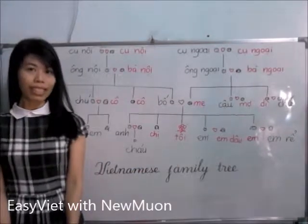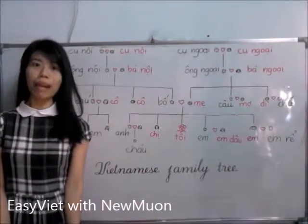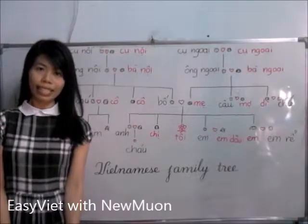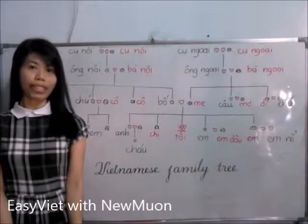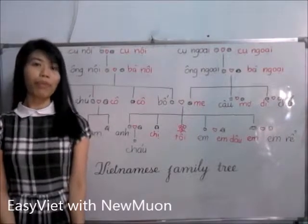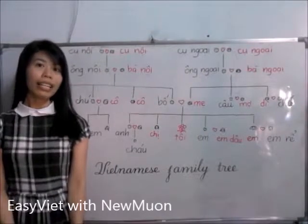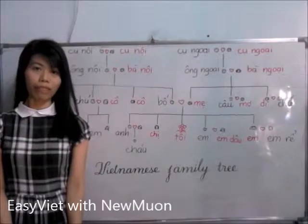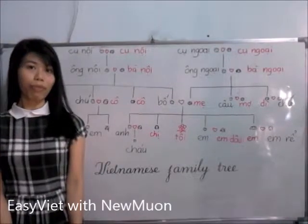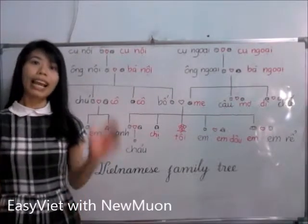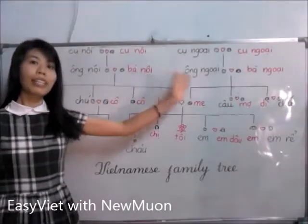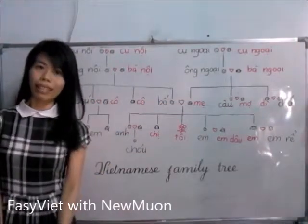Firstly, I want to explain some about the diagram. As you can see, there are two colors for the text. Red is used for the female and black is for male. Also, there are two sides for the diagram: the left side is for the father's side and the right is for the mother's side.